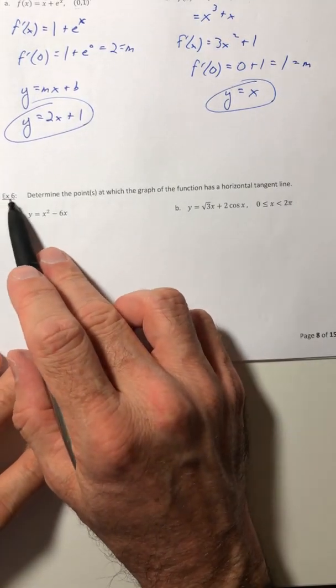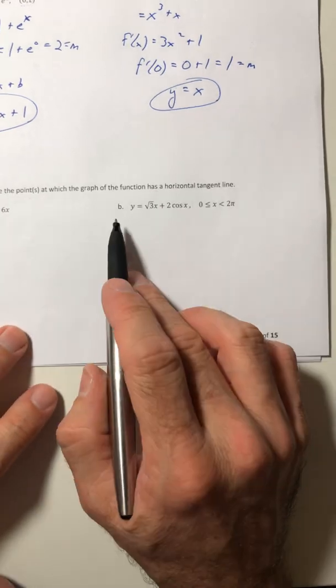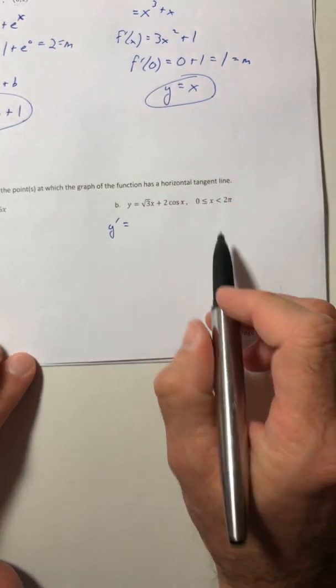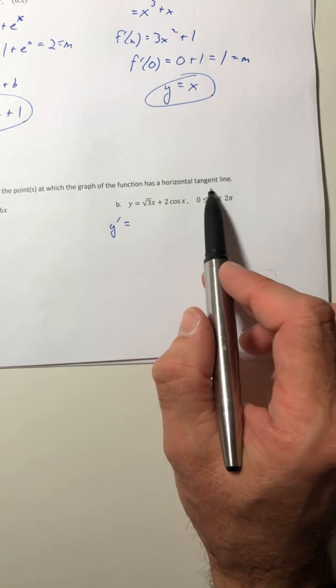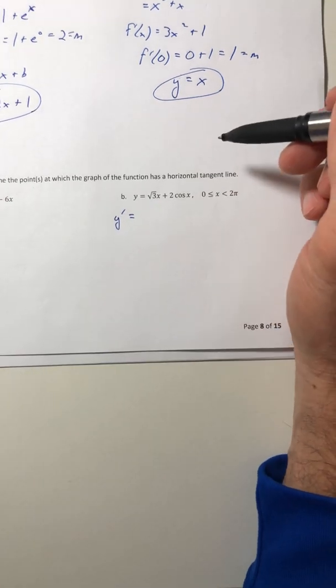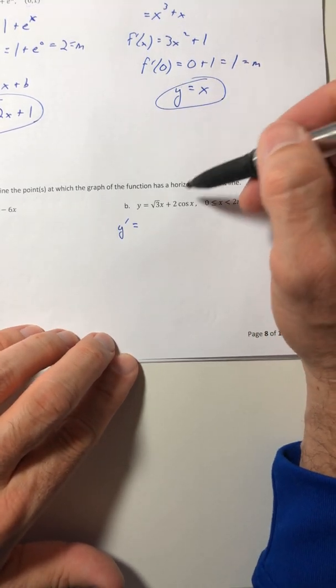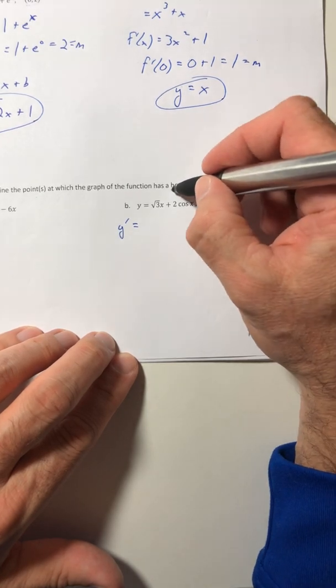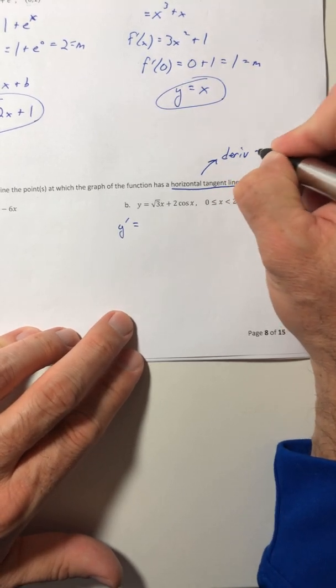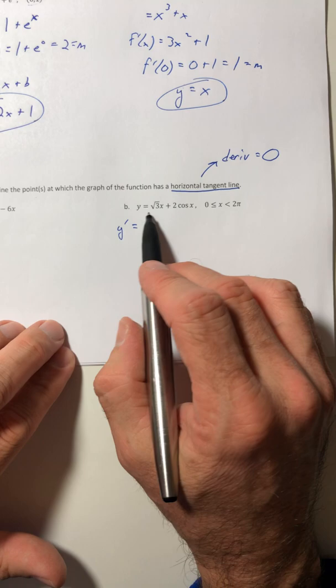All right, part six or example six. Determine the point or points at which the graph has a horizontal tangent line. So let's do part b since it has that trig function. So it's talking about a horizontal tangent line. Anytime like a horizontal tangent line, you know tangent line, what else you know? What was a tangent line? Well that was the derivative, because the derivative is the slope of the tangent line. Well if it's horizontal, that means that the derivative is equal to zero, because what's the slope of any horizontal line? Zero.